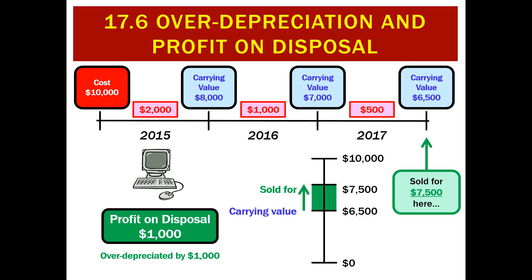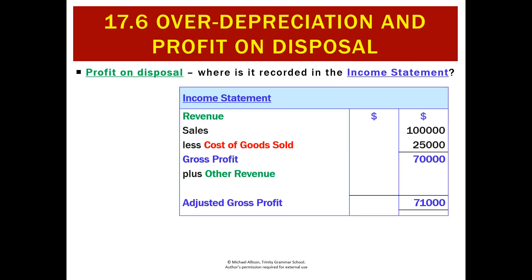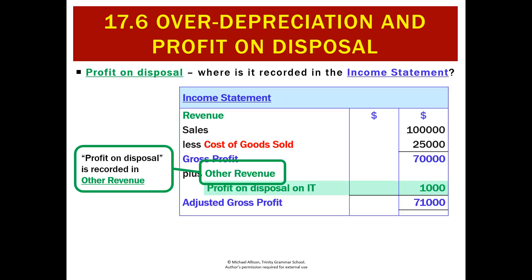We sent it all the way down there when really we should have only sent it from here to here, so we need to fix this. This is called a profit on disposal — we've over-depreciated it by $1,000. Where does that get recorded? It's actually going to be a revenue, and it's not going to go with regular sales. We'll put it with other revenue — profit on disposal of IT, $1,000, recorded under other revenue.